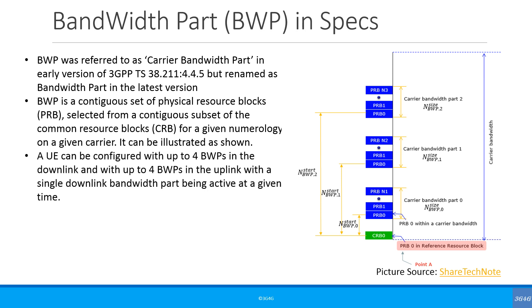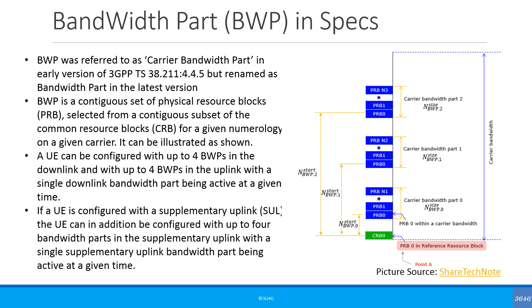A UE can be configured with up to four bandwidth parts in the downlink and up to four bandwidth parts in the uplink, with a single downlink bandwidth part being active at any given time and a single uplink bandwidth part being active at any given time. If a UE is configured with supplementary uplink, the UE can in addition be configured with four bandwidth parts in the supplementary uplink, with a single supplementary uplink bandwidth part being active at any given time.